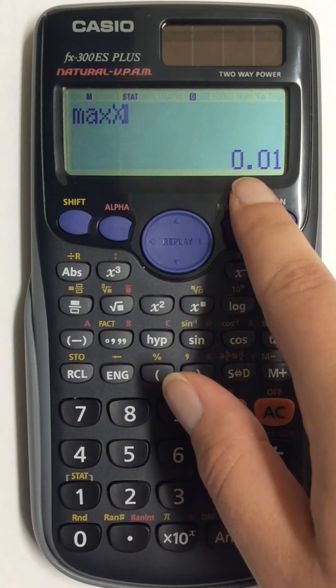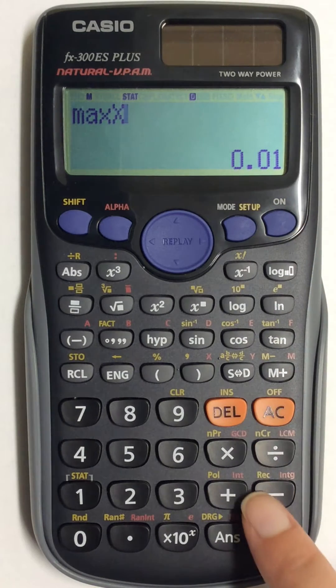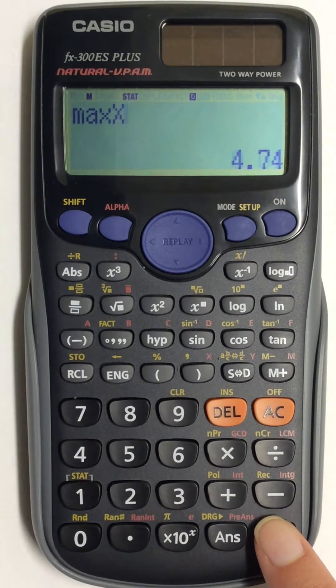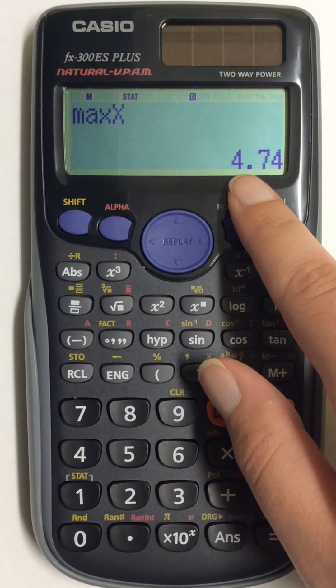Your minimum number is still on the screen, so you need to hit equals in order to get your maximum this time. And your maximum number will show on the screen.